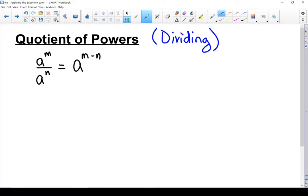You take the exponent from the numerator, subtract the exponent from the denominator, and that gives you your answer. Once again, this only works if you have the same base, and we subtract the exponents.